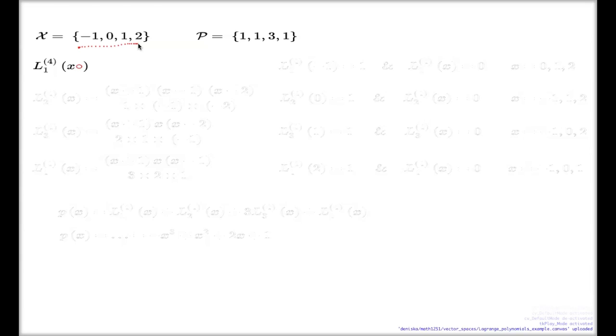It's the fourth order Lagrange polynomials because we have four points. And here's my first polynomial. Look at this. In the enumerator, I take linear brackets with every number from this set except for the very first number. In the denominator, I take the enumerator where x is replaced with the first number. So in the denominator, that's the factor I have. Negative 1 here, negative 1 here, and negative 1 here. Here's my first Lagrange polynomial of order 4.